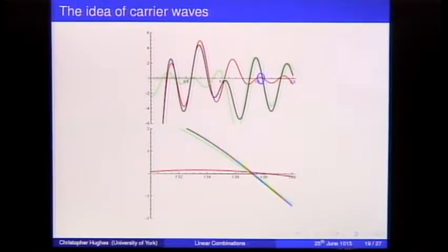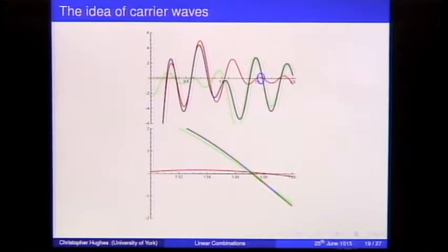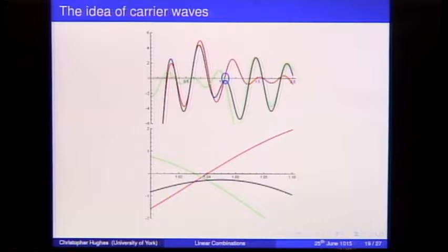Eventually the green characteristic polynomial becomes bigger than the red — it becomes the carrier wave — and that's fine, because it also has zeros on the unit circle. The linear combination now follows the zeros of the green carrier wave. I also show a case where things don't work: the two characteristic polynomials cancel each other out, there's no dominant one, and a zero is destroyed. This is typical behavior.